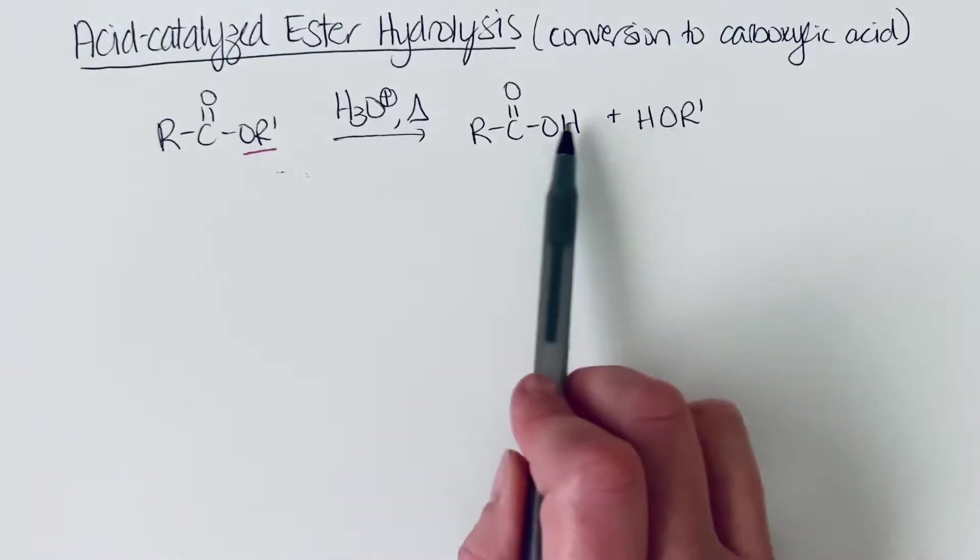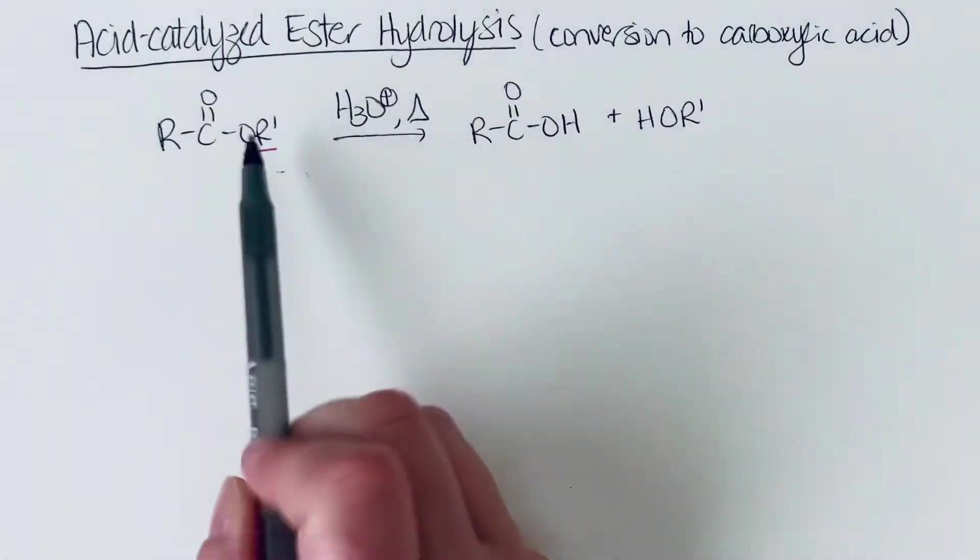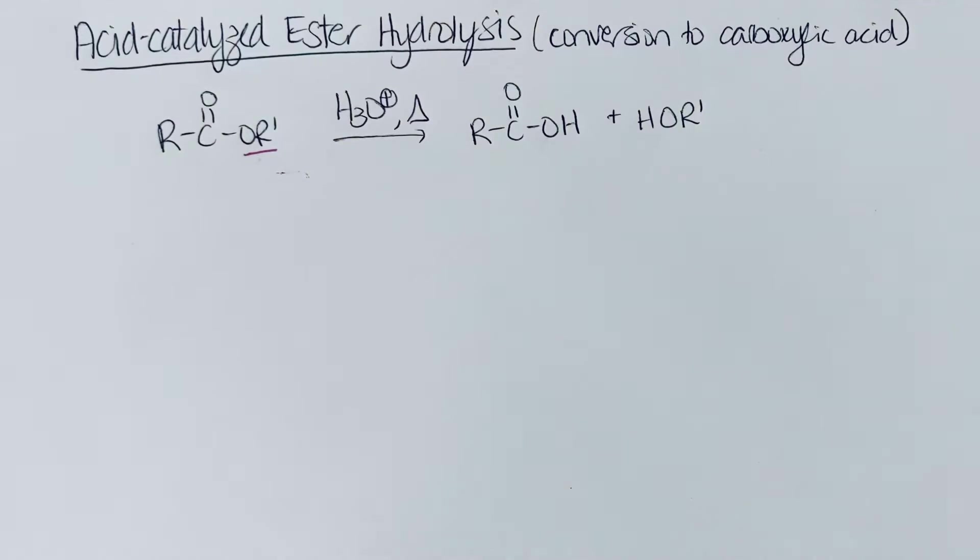And so this is not really, this alkoxide is no better of a leaving group than this hydroxide would be, or an aqueous solution, a more accurate way to say would be the neutral alcohol or the neutral water, because it's going to be protonated. Neither one of this is a better leaving group than the others. This is an equilibrium reaction.